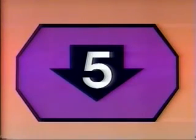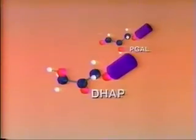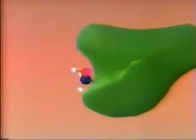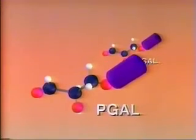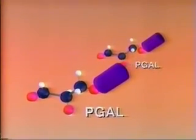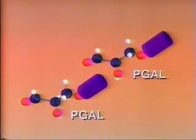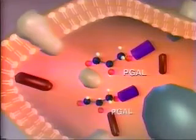In reaction 5, DHAP is converted into a second PGAL molecule. The two companion PGAL molecules now continue along the pathway. And that's it — the first half of glycolysis.